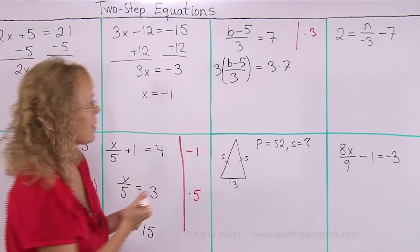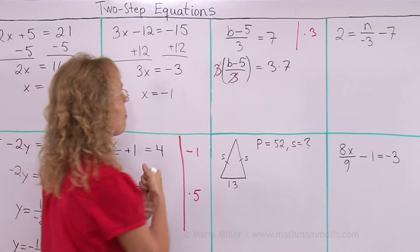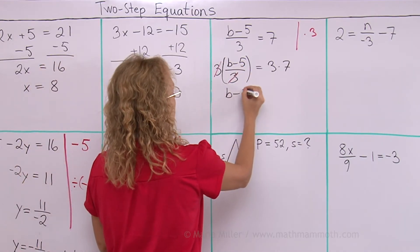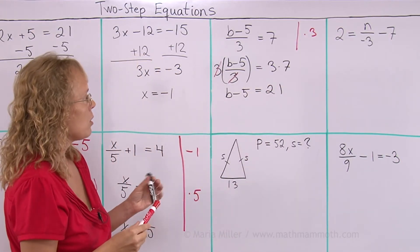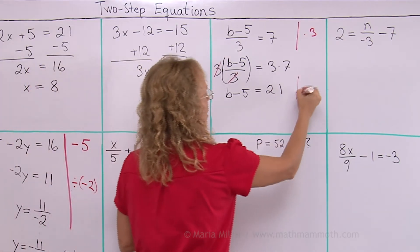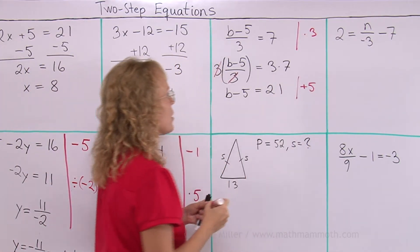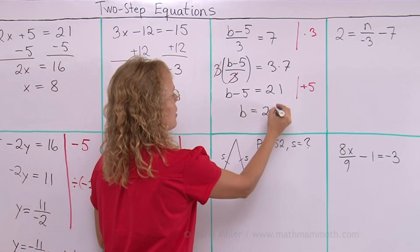Now those 3's cancel, right? This 3 and this 3 cancels out. So we have b minus 5 now. 1 equals 21. And now I just get rid of that minus 5 by adding 5 to both sides. So then I have b alone here and 26 on this side.